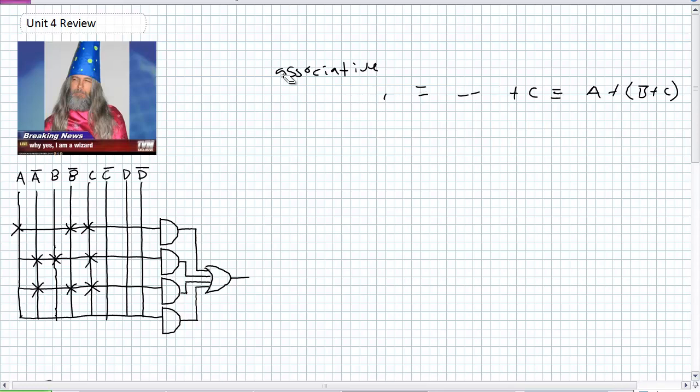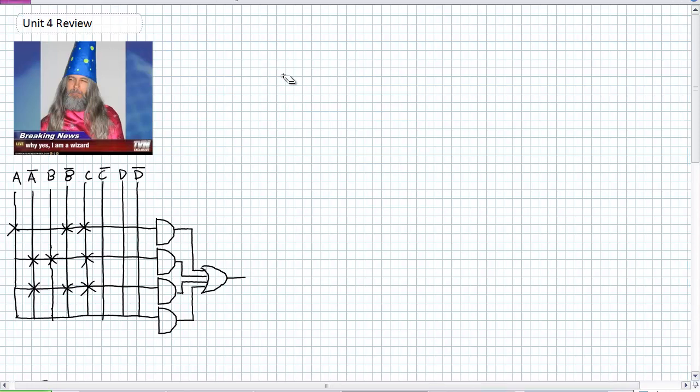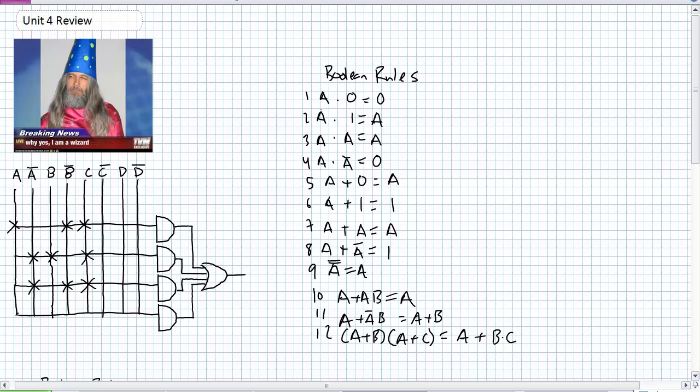What's the rules? Do not show up to this week's lab without the Boolean rules, because probably the first thing you're going to use is the Boolean rules. Here they are, you don't have to memorize them in order. I kind of divide them this way: 1 through 4 deal with ands, 5 through 8 deal with ors, kind of your miscellaneous, 9 through 12.